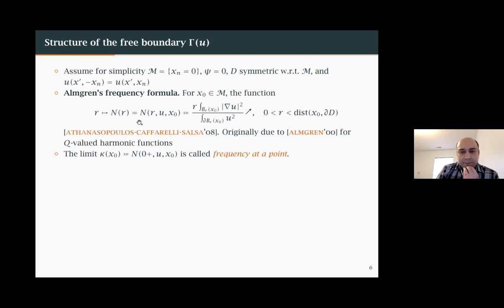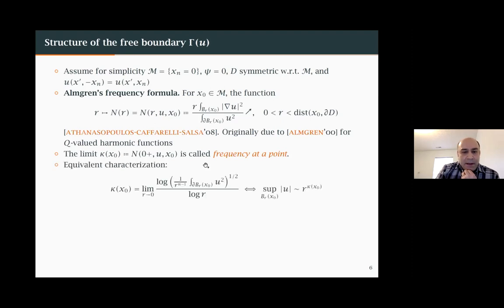The Almgren frequency formula is monotone, so there exists a limit as R goes to zero. We call that κ(x₀), the frequency at a point. This frequency captures the growth rate: the supremum of u squared over a ball of radius R grows like a constant times R^{κ(x₀)}. The blow-ups (Almgren rescalings) are homogeneous of degree κ, the frequency at the point.